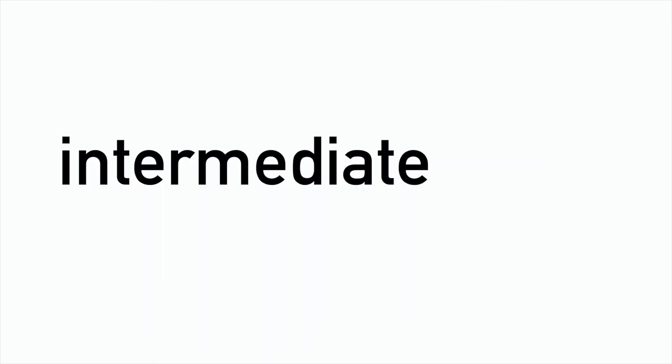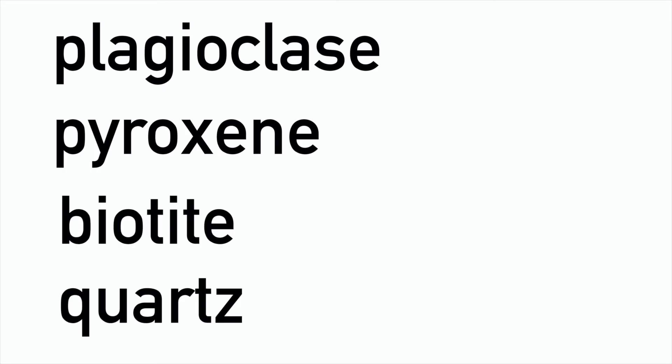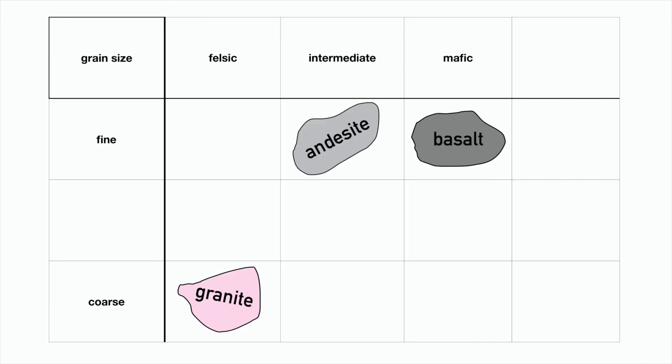In the middle of these two is andesite, known as an intermediate rock. As a result, it is a bit of a mix of plagioclase feldspar and pyroxene, as well as biotite-type mica and quartz often too. Andesite will go here on our table.